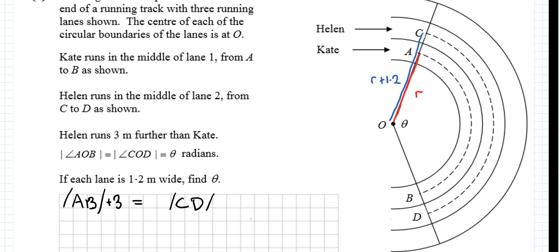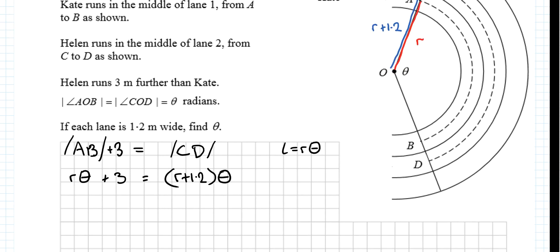We want the length. So L equals OR theta. And AB, L equals OR theta. AB, we don't know the length. L equals OR theta. So that's OR theta plus 3 equals... Now, what's the radius for CD? The radius is OR plus 1.2 theta. Start to multiply this out.